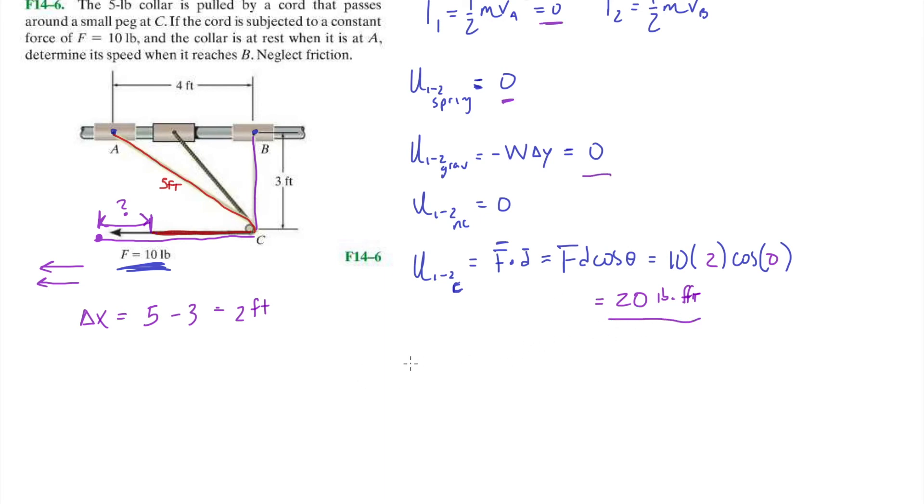So, once we're here, let's just apply the work energy theorem. T1 plus U12 equals T2, okay? What's T1? Well, it's 0. What are all the work done by conservative and non-conservative forces? Well, I have 0 from the spring, 0 from the gravitational energy, or gravity, work done by gravity, 0 from friction, and then I have my plus 20 equals my T2, which is 5 divided by 32.2, that's the mass, times VB squared, okay? Remember, guys, divide your pounds by 32.2 to get your mass.